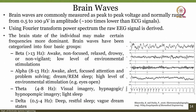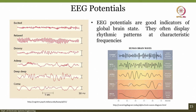Let us go to the next slide. EEG potentials are good indicators of global brain state and they often display rhythmic patterns at characteristic frequencies. On the left side, if you see, there is an excited state, relaxed state, drowsy state, asleep, deep sleep, and coma. You can clearly see how the signals vary when the person is relaxed versus in deep sleep versus drowsy versus excited.